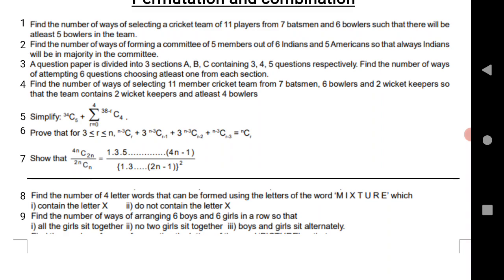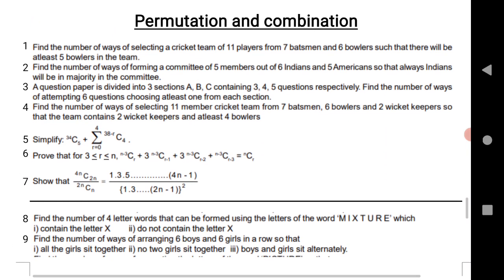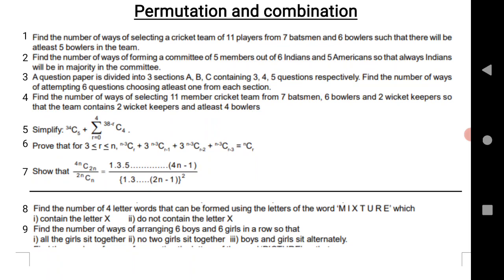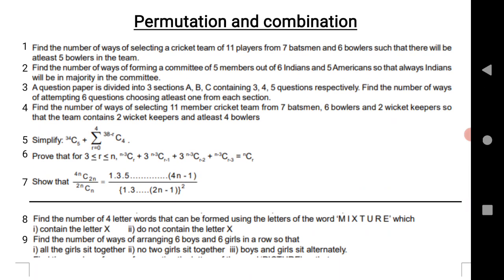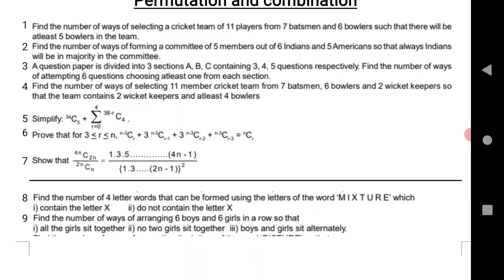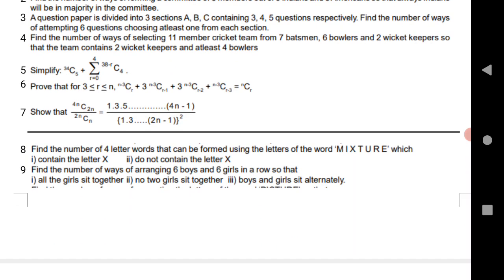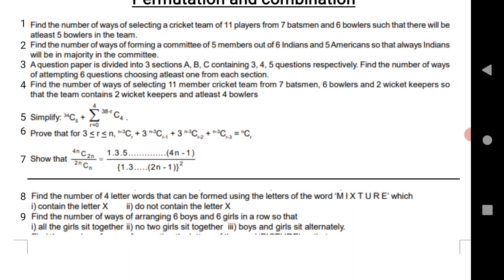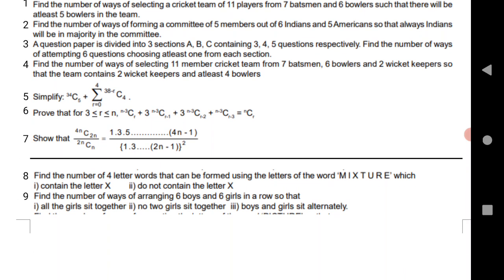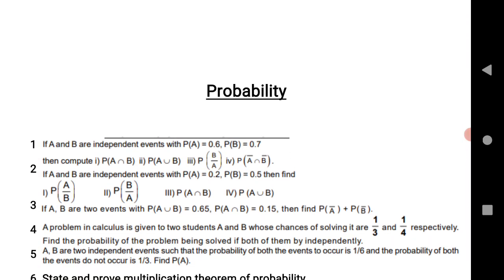There is also a question involving ³⁰⁻ᵢ⁻ᴿC₄ — practice that question as well. Permutation and Combination is for both TS and AP states. The eighth question is: find the number of four-letter words that can be formed using the letters of the word MIXTURE containing the letter X / not containing the letter X. The ninth question is also very important. Practice all nine questions to get four marks from this chapter.